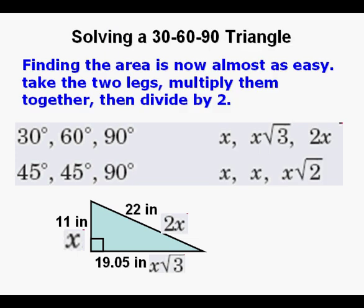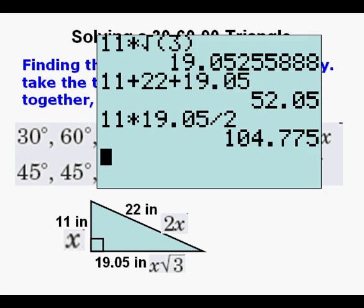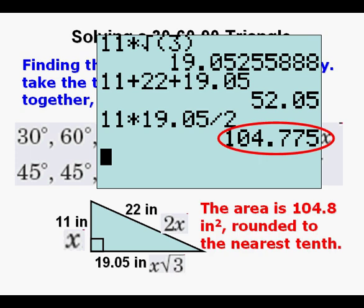Finally, the area is almost as easy. We take the two legs, multiply them together, and divide by 2. So we get an area of 104.78 rounded to the nearest tenth.